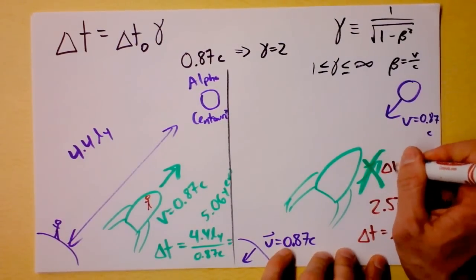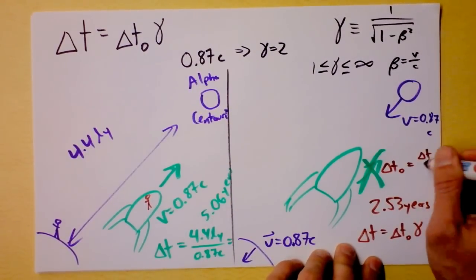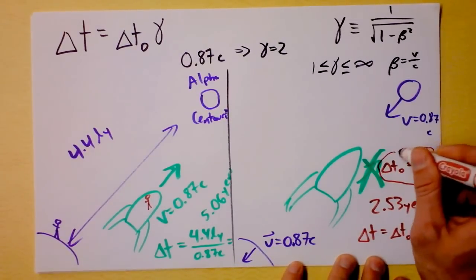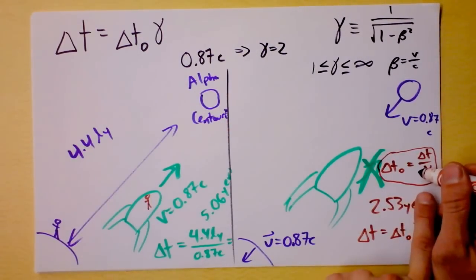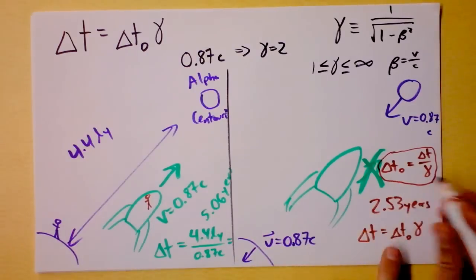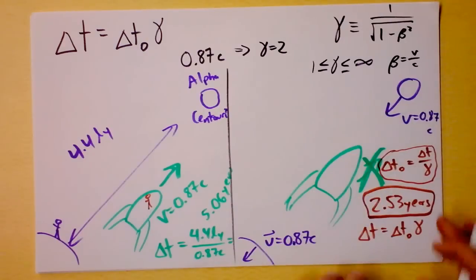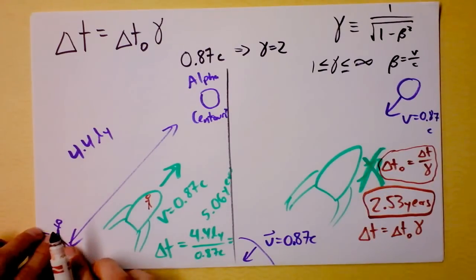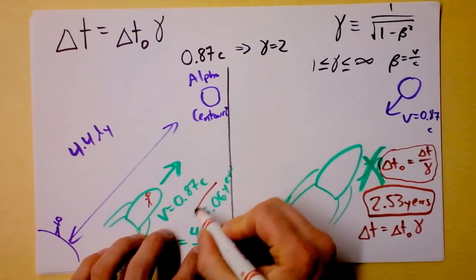And we've got gamma is 2. Delta T naught would be the time of the person who's not moving in the spaceship. Delta T naught is going to be delta T. Careful now. If I start making this presented the other direction, you might get confused, but we are solving for the time of the person who's at rest relative to the two time events. And so that person there is taking much less time because gamma is a number between one and infinity. So the person in the rocket ship believes that it takes them 2.53 years to get to Alpha Centauri or to get for Alpha Centauri to get to the rocket ship, because the person never thinks that they move.